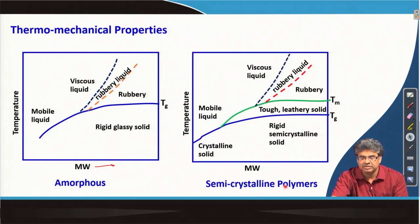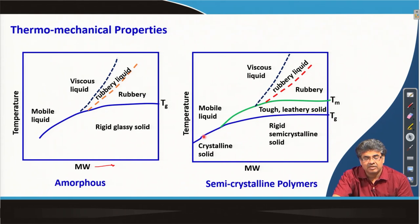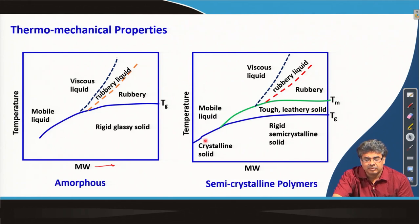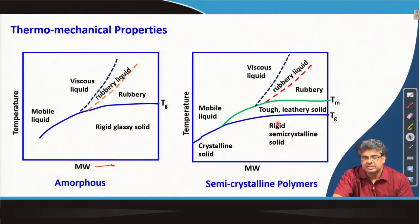For a semi-crystalline polymer, when the molecular weight is very low, because the molecular weight is so low we can call the sample an oligomer rather than a polymer. It might crystallize to a high extent. Going above the melting point takes it from a crystalline solid to mobile liquid. For higher molecular weight, as we increase temperature, the sample goes from a rigid semi-crystalline solid to a leathery tough solid, to a rubbery region, then rubbery liquid, and finally viscous liquid.